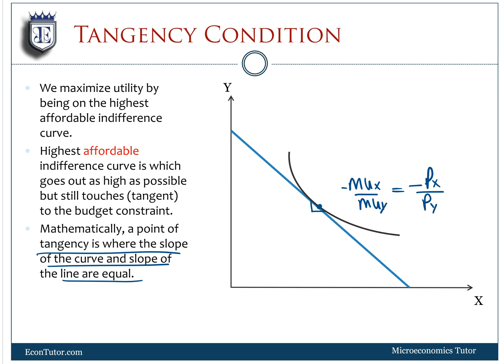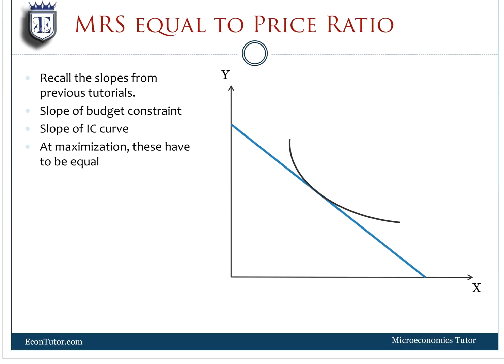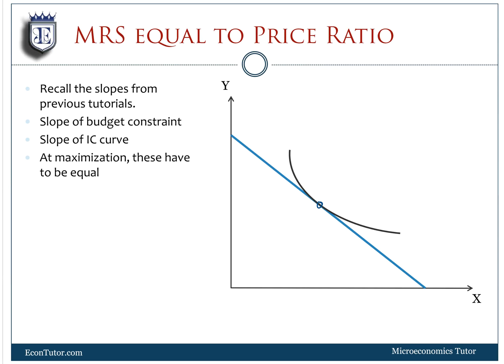So this is our big condition for utility maximization. We set these two equal, and that's what gives us this utility maximized point.